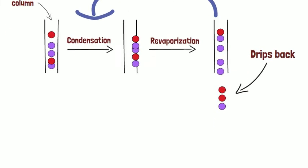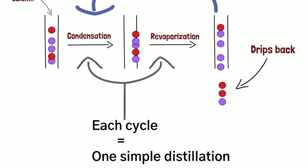Each vaporization condensation cycle is equivalent to a simple distillation, so by the time the vapor reaches the top of the column, it has undergone several simple distillations. However, because this is done in one setup, much less material is lost compared to if we had done several separate simple distillations.